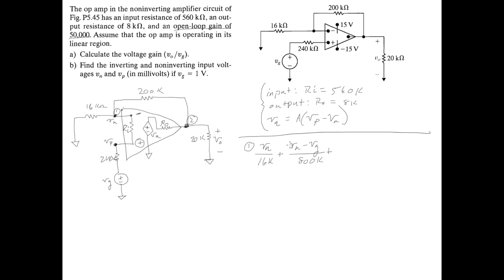Plus, our last current we assume is leaving is just Vn minus this node right here, which we know, since this is already labeled as V0, this node must be V0. So our last current is Vn minus V0 over 200k. I want to just write that here. Vn minus V0 over 200k.